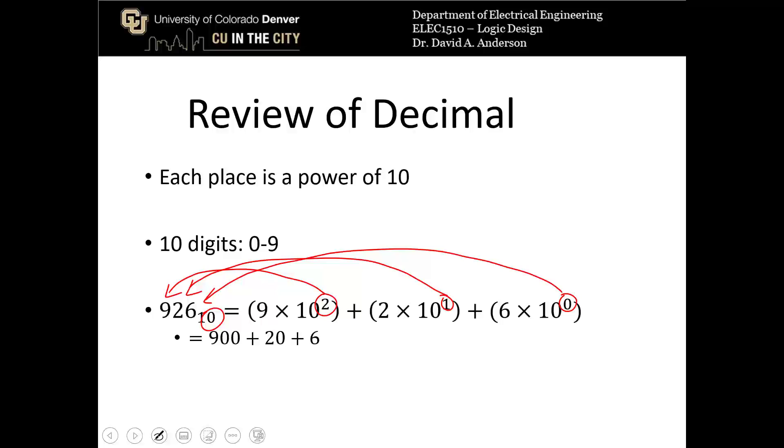So every place in a decimal number is a power of 10. It starts off with the power of 0, which is just 1.